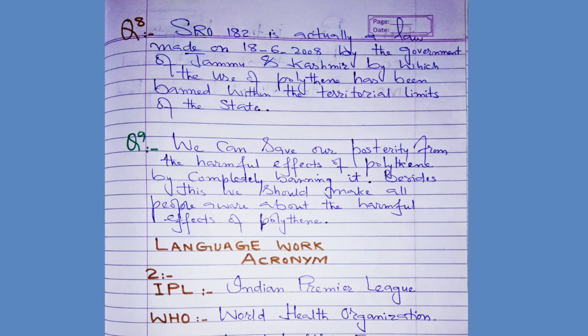Question number nine: How can we save our posterity from the harmful effects of polythene? We can save our posterity from the harmful effects of polythene by completely banning it. Besides this, we should make all people aware about the harmful effects of polythene, so that people understand how harmful it is and stop using it.